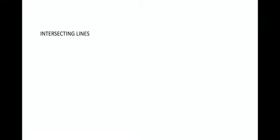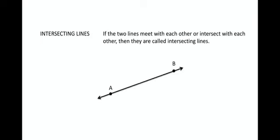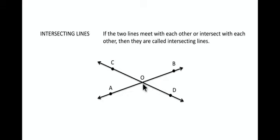Next we have intersecting lines. If two lines meet each other or intersect each other, then they are called intersecting lines. For example, let's say there is a line AB and another line CD which meets each other at point O. Then we can say that AB intersects CD, or CD intersects AB at point O. This point O becomes the point of intersection, also called the intersecting point.